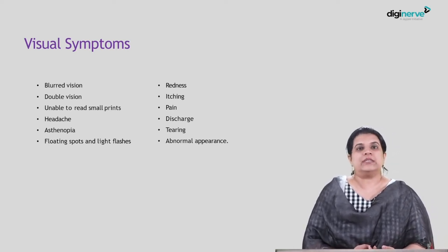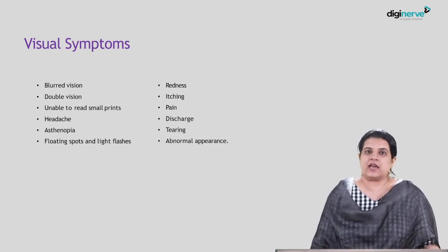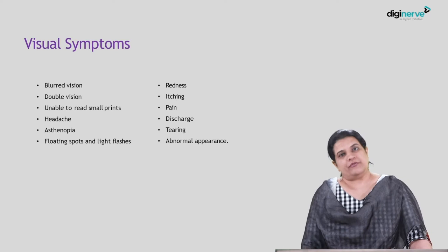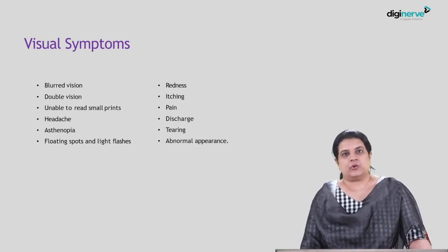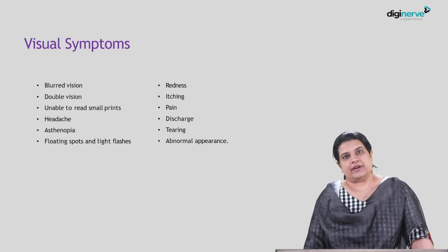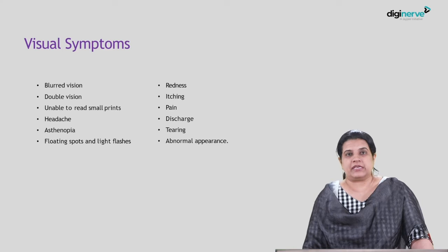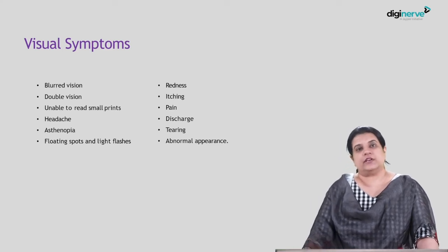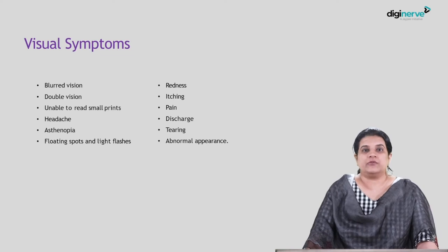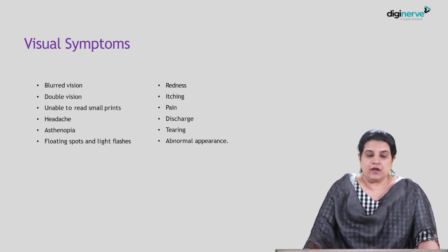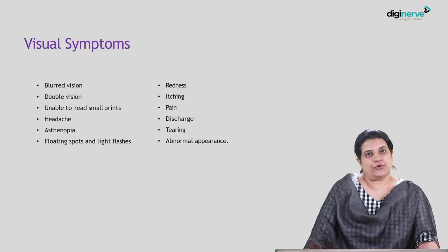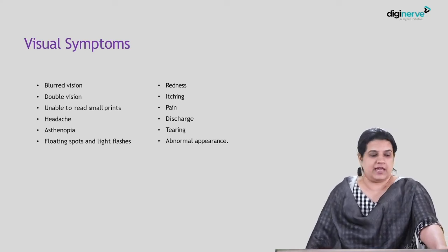Patients may also complain of flashes and floaters, which can be sudden onset or longstanding and are more perceivable in sunlight. Redness can be localized or diffuse, associated with itching, and there may be pain — mild, moderate, or severe; dull or sharp shooting. If there is discharge, note its nature: watery, mucoid, mucopurulent, or purulent, or ropy. Note whether watering is off-and-on or persistent, and any abnormal appearance of the eye and its associated adnexa.